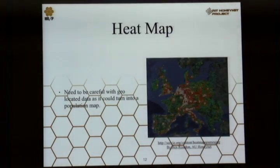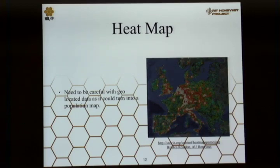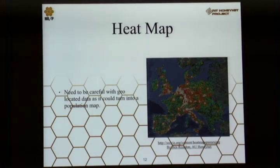Then you get heat maps. The specific example is heat maps with geolocated related data — this is showing senders of spam hitting a particular spam trap. You have to be careful with this type of map because occasionally it will end up looking like a population map, because most places with lots of people have lots of computers, and odds are half of them are sending out spam.